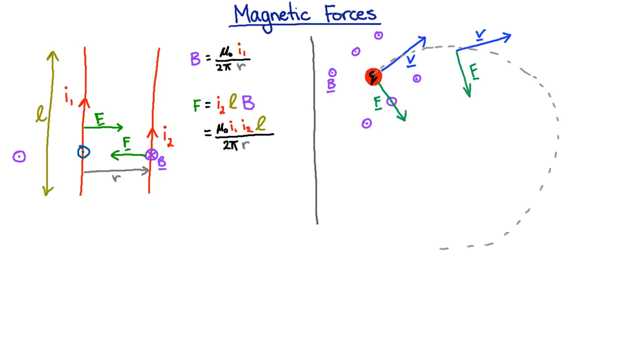And we can figure out how big a circle, because we know that the centripetal acceleration has to be provided by the magnetic force. And so the magnetic force is going to be equal to the mass of that particle times its velocity squared divided by the radius of that circle.